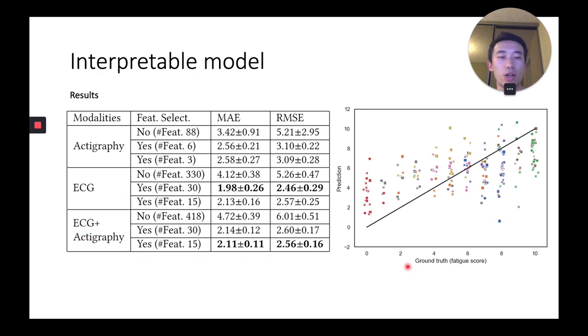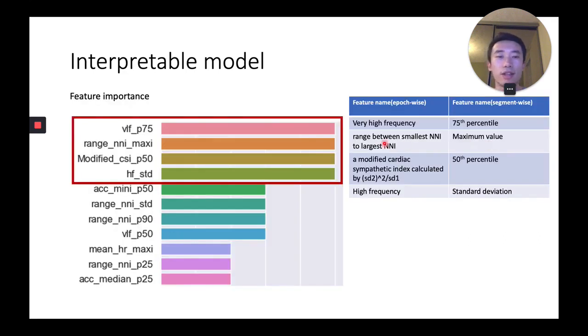Here is the correlation between ground truth and prediction. As we can see, they have a moderately positive correlation. These are the selected features. You can refer to the paper for more details.